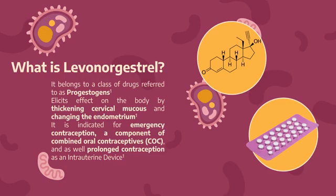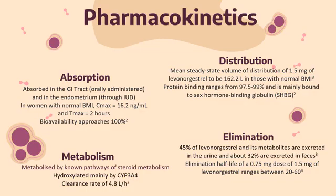With this in mind, let us have a closer look at the pharmacology of levonorgestrel. Orally administered levonorgestrel is absorbed in the gastrointestinal tract, while levonorgestrel administered for an IUD is absorbed in the endometrium. A pharmacokinetic study of 1.5 mg of levonorgestrel in women with normal BMI showed a Cmax of 16.2 ng/mL and a Tmax of 2 hours.